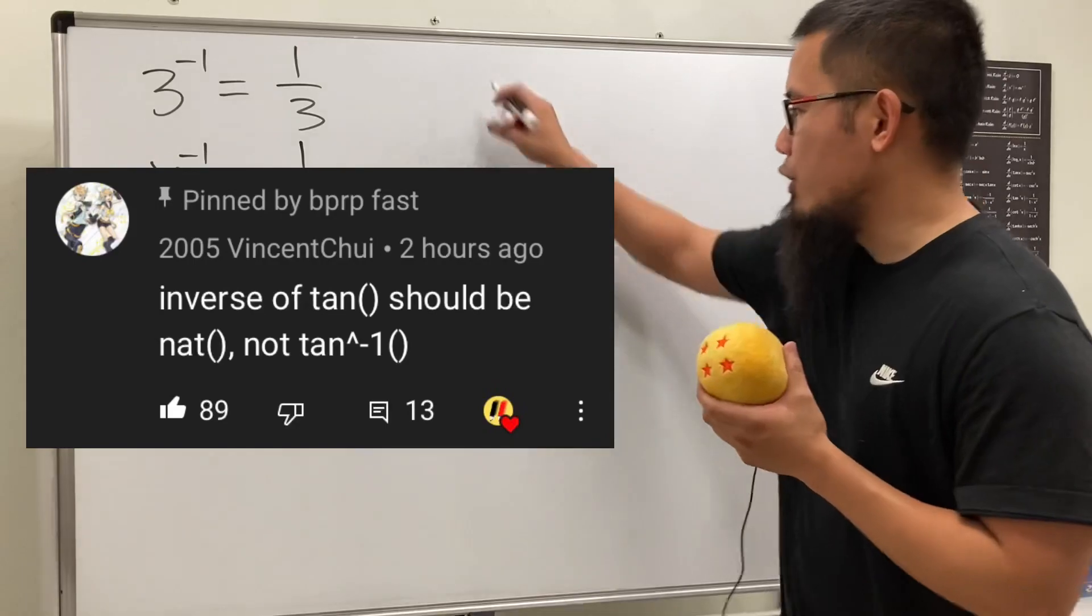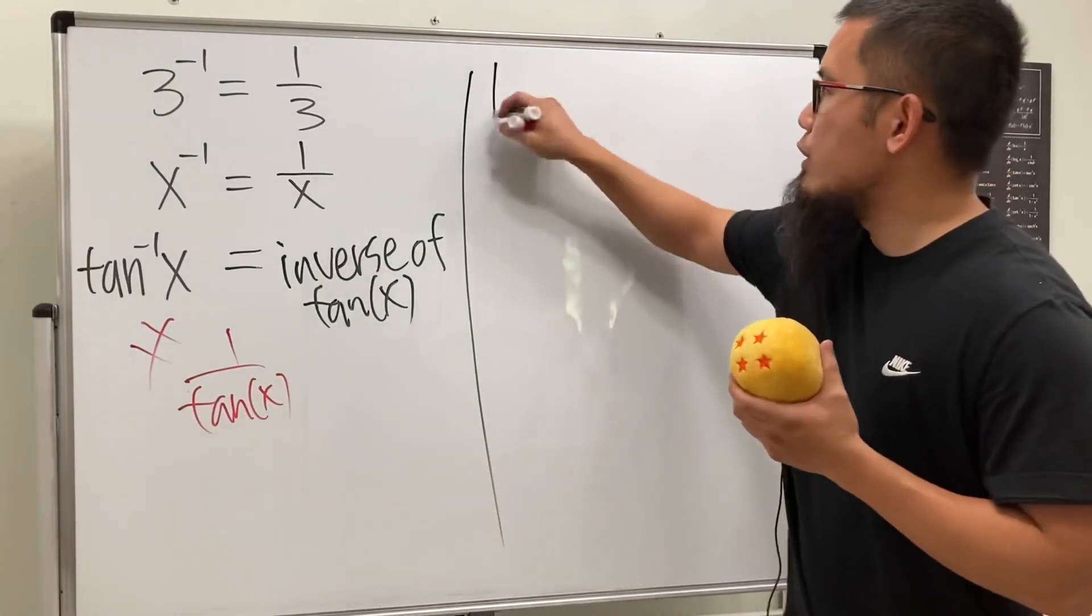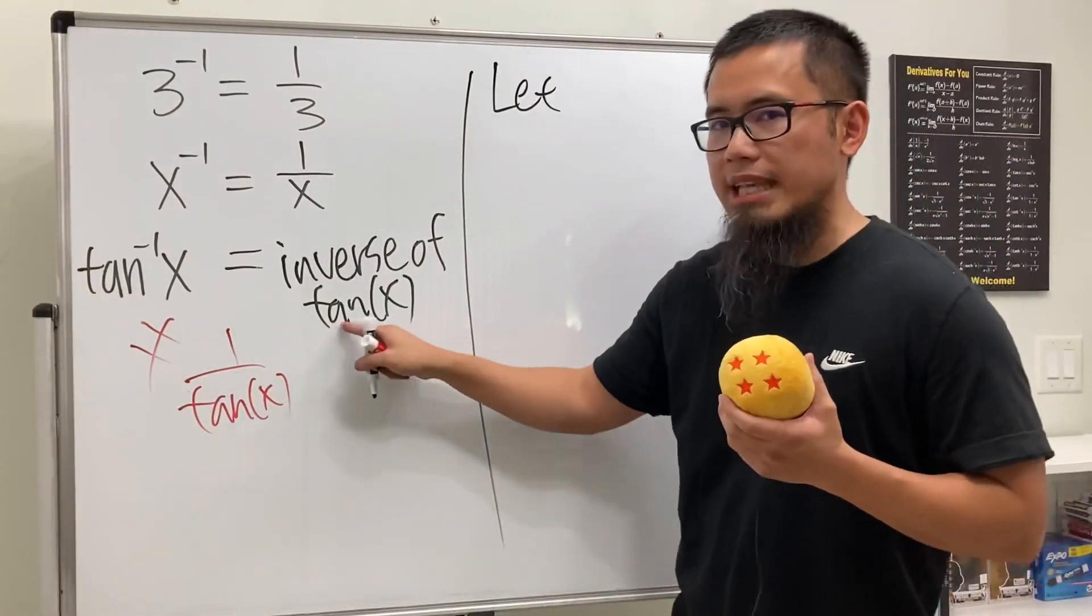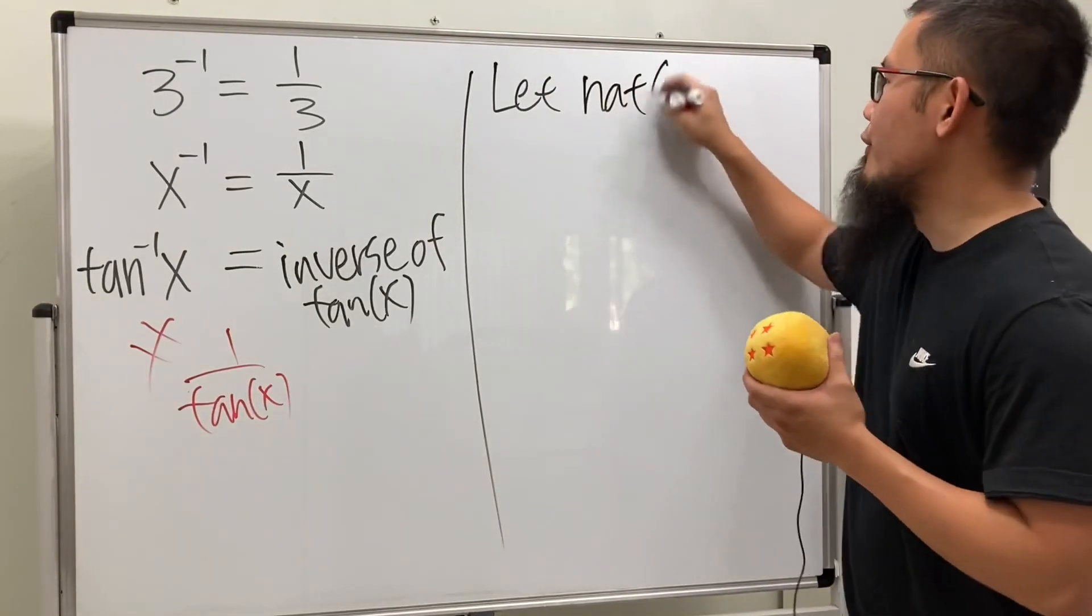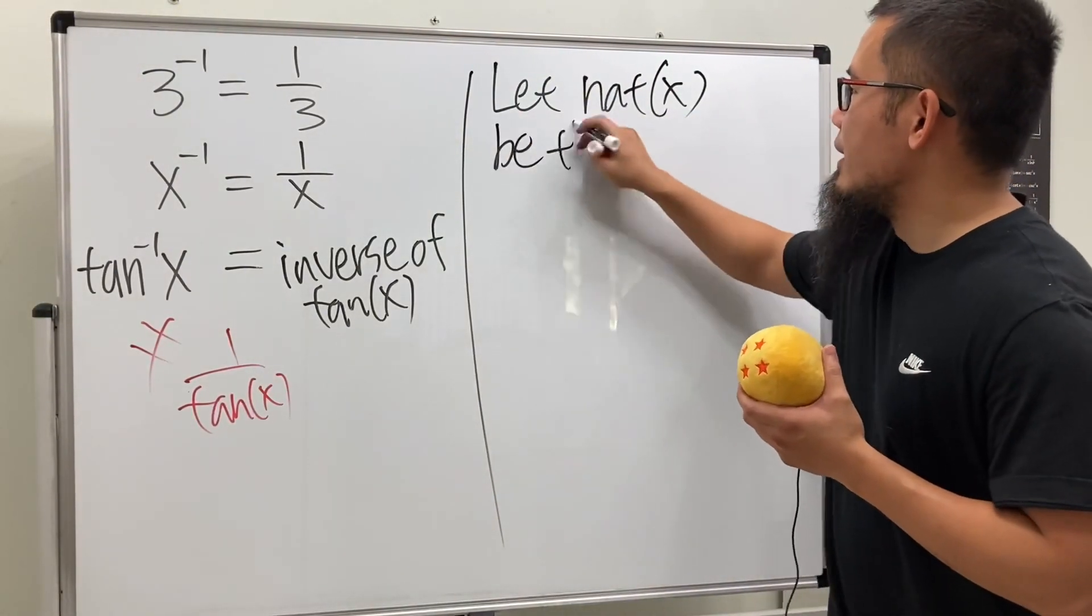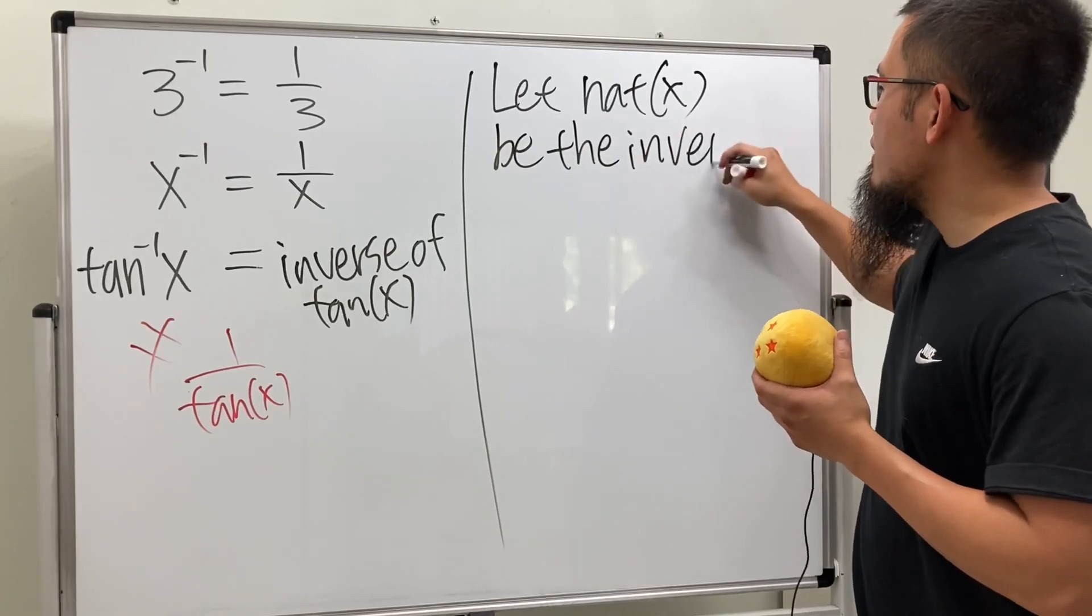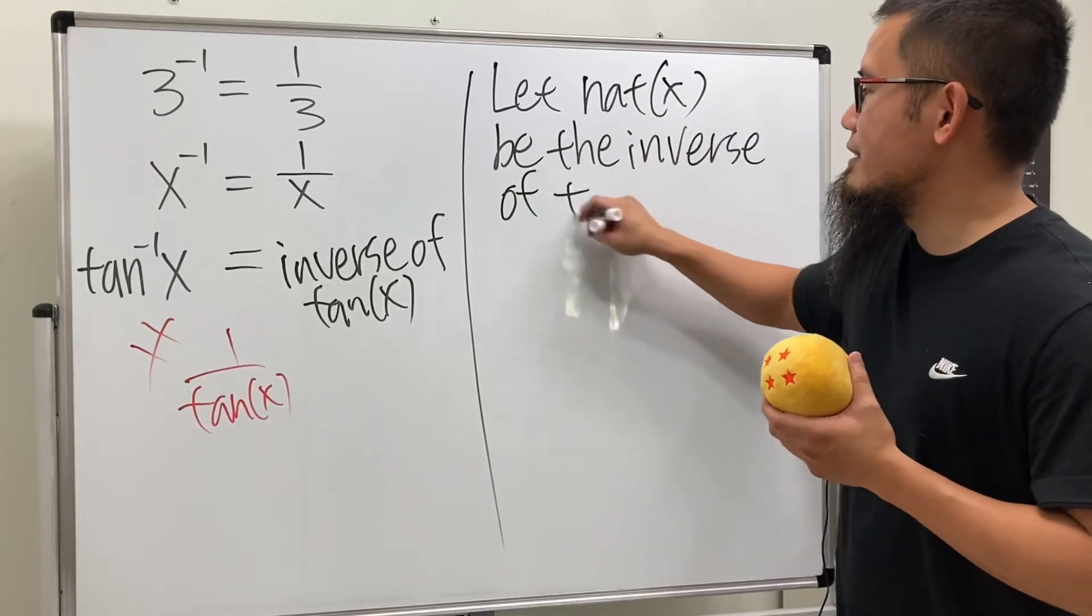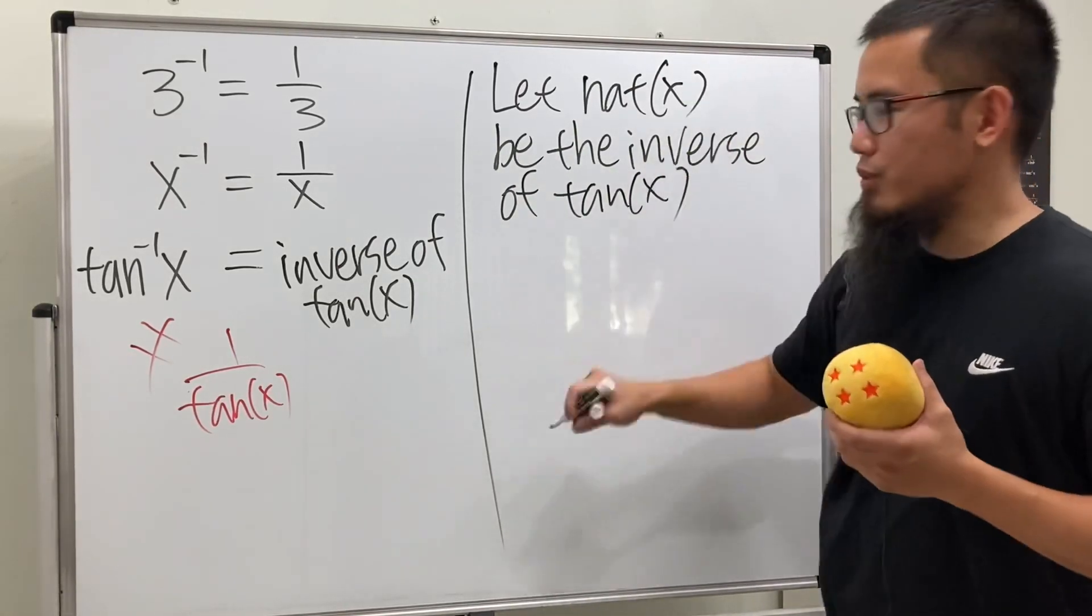So today I want to thank Vincent for suggesting a new notation. Check this out. We are going to let—and as you can see earlier was tan—so now let's go ahead and put down nat of x to be the inverse of tangent x. And this is genius. What does this do? Well, check this out.